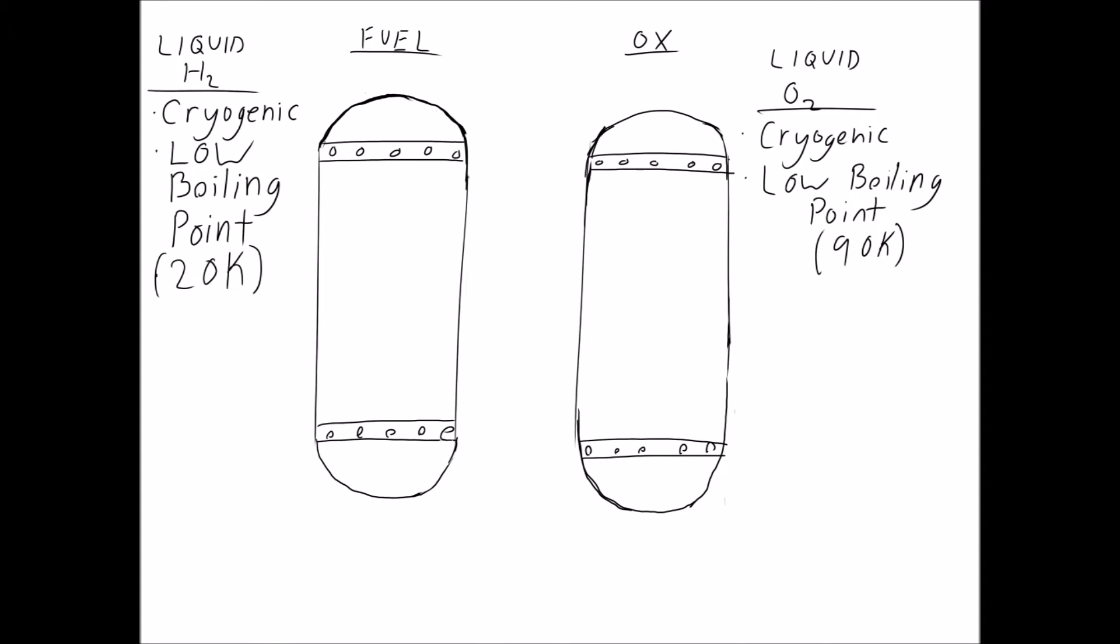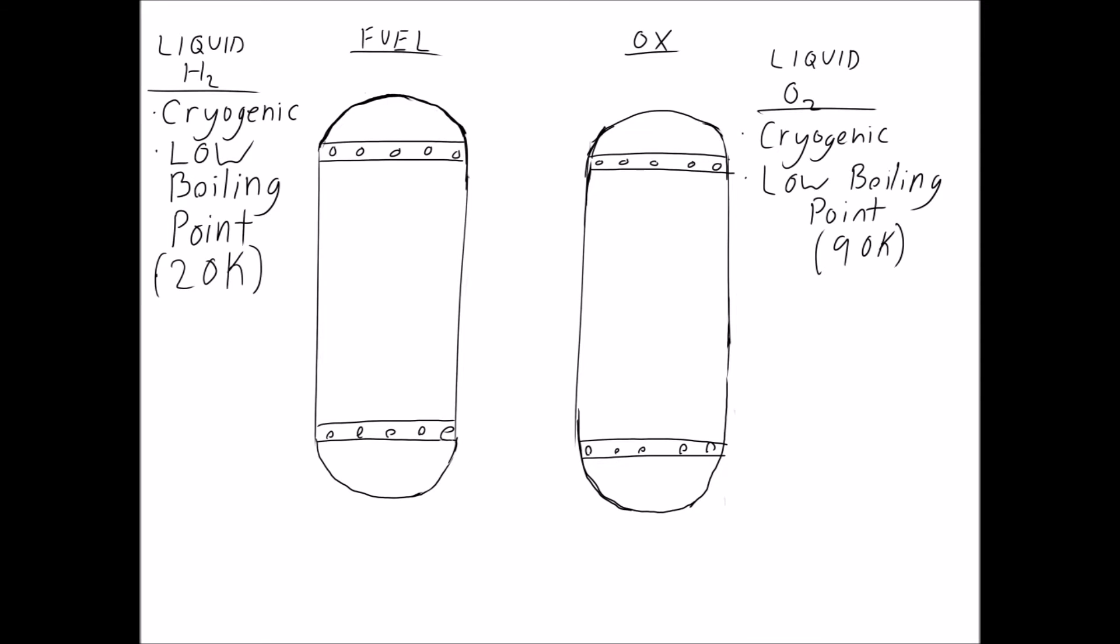Liquid propellant systems can be fairly complex. To begin with, liquid hydrogen and liquid oxygen have very low boiling points. You usually find hydrogen and oxygen in their gaseous states. So in order to keep them in their liquid form, they have to be kept at very low temperatures. Liquid oxygen must be kept at 90 Kelvin, while liquid hydrogen must be kept below 20 Kelvin.